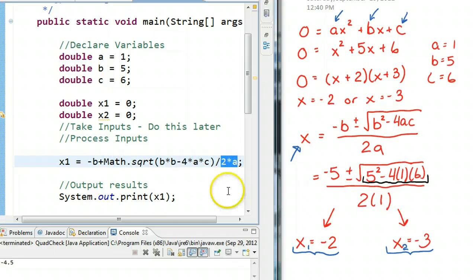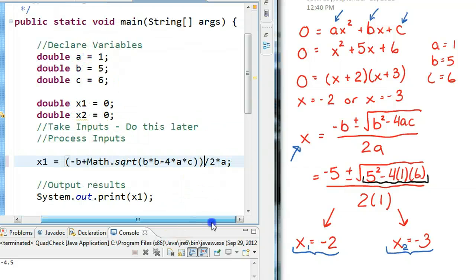So, we have to really watch here because we want to add negative b first. So, I'm going to insert a set of parentheses to kind of force that. I'm going to scroll over here. There we go. So, now, when I run it.